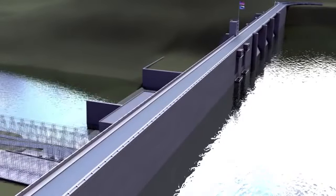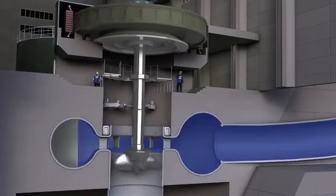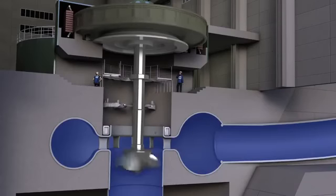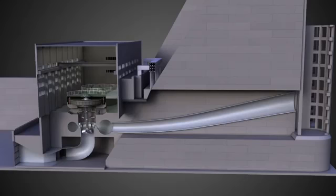Gravity causes the water to fall through a pipe inside the dam, called a penstock. The falling water spins a turbine, a type of water wheel that converts the water's energy into mechanical power, which is located at the end of the penstock.